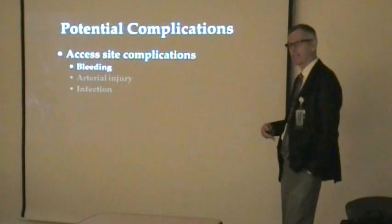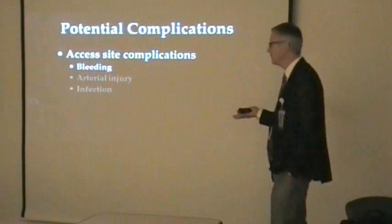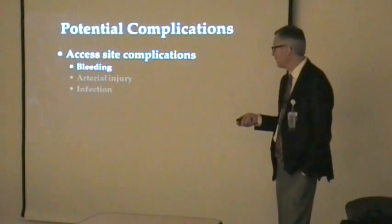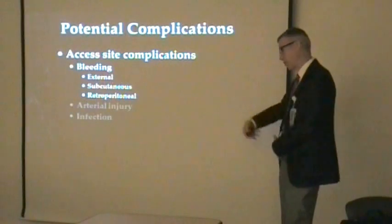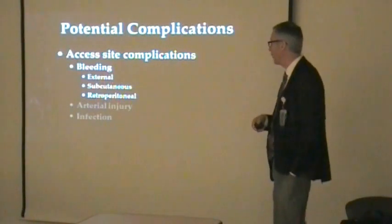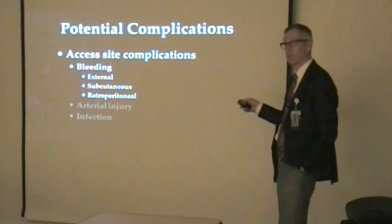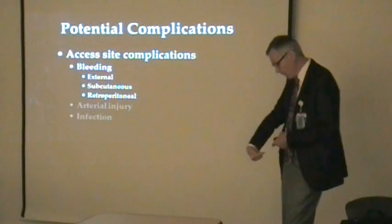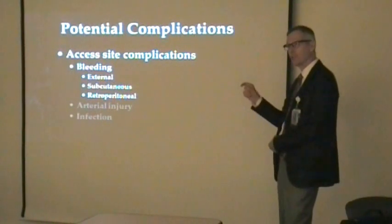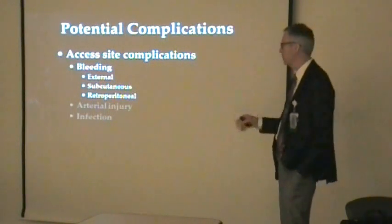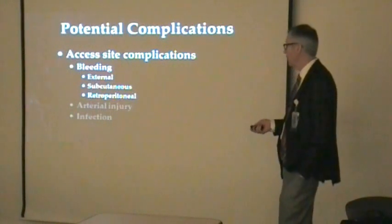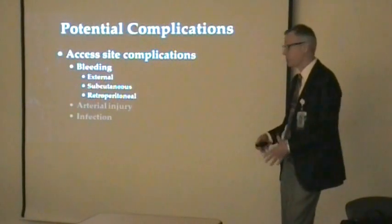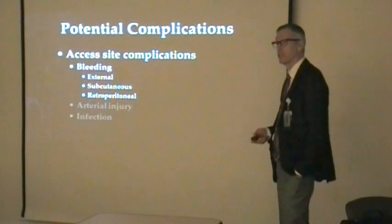At the access site, three things can happen: bleeding, arterial injury and obstruction, or infection. External bleeding is obvious and pulsatile, but uncommon, and easily managed with direct pressure — remember the puncture in the artery is usually an inch or two above the skin nick, so apply pressure slightly proximal. Bleeding can also be subcutaneous — an obese patient can lose a liter internally with little visible sign — so mark any hematoma and apply pressure if subcutaneous bleeding is suspected.